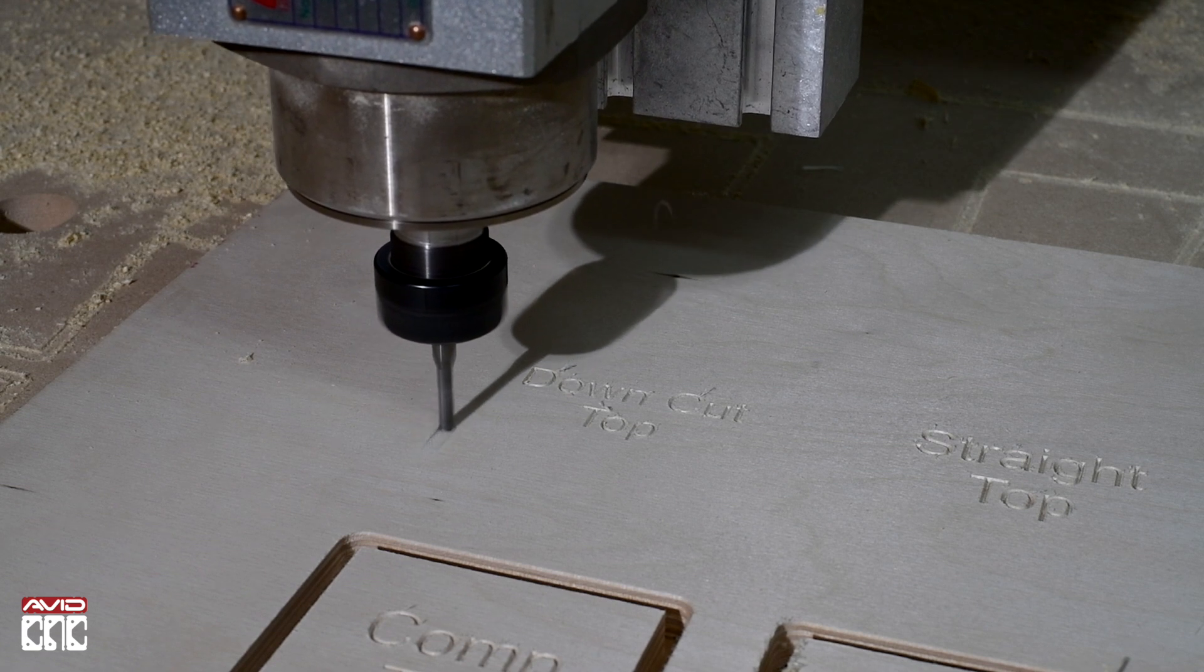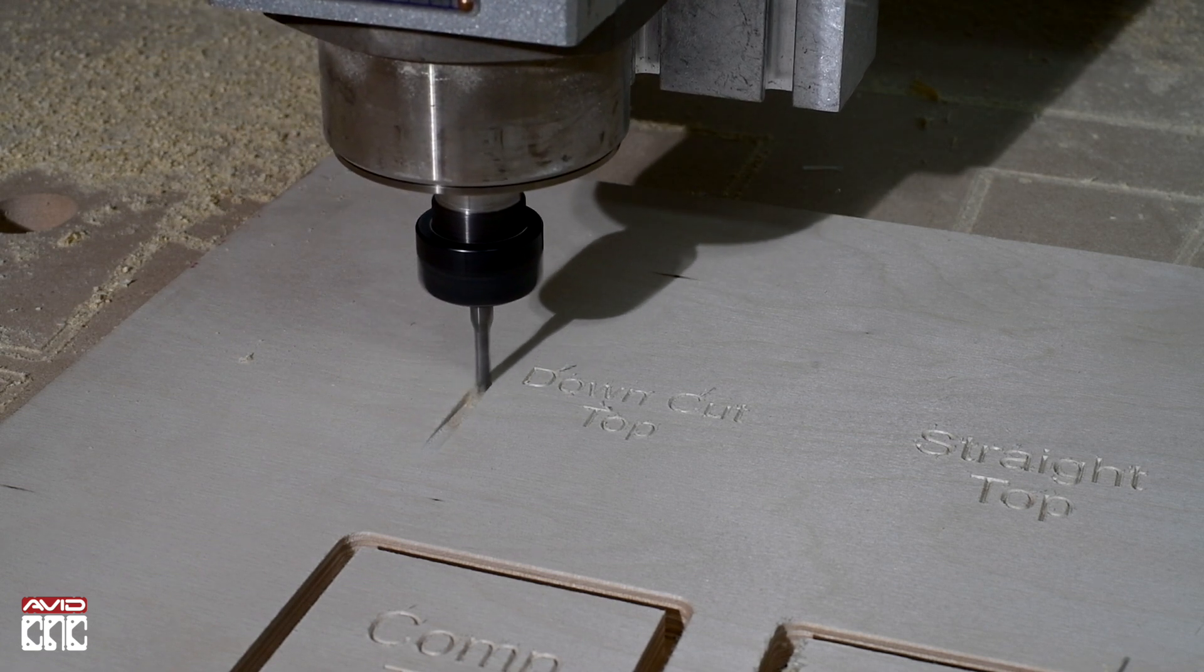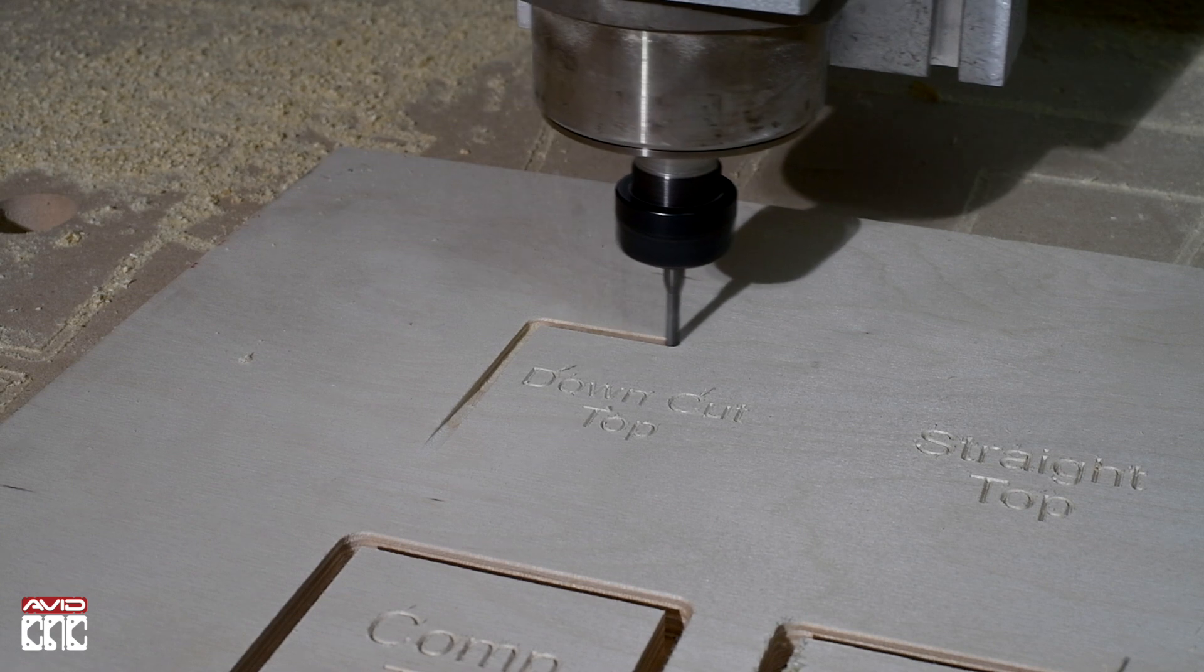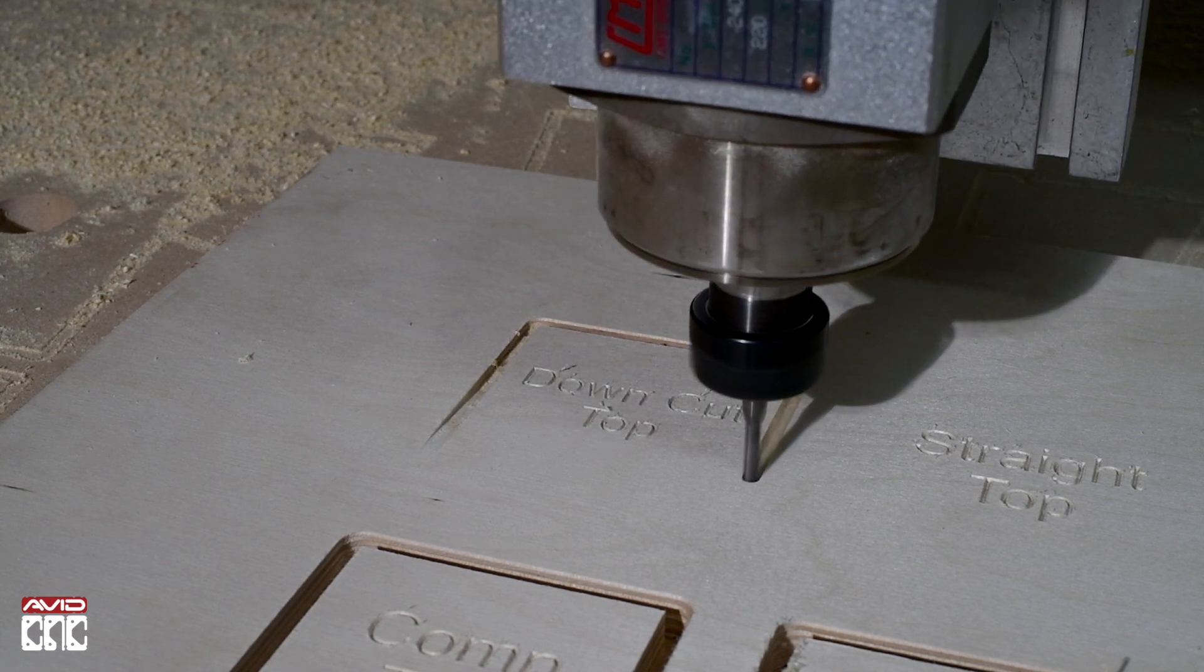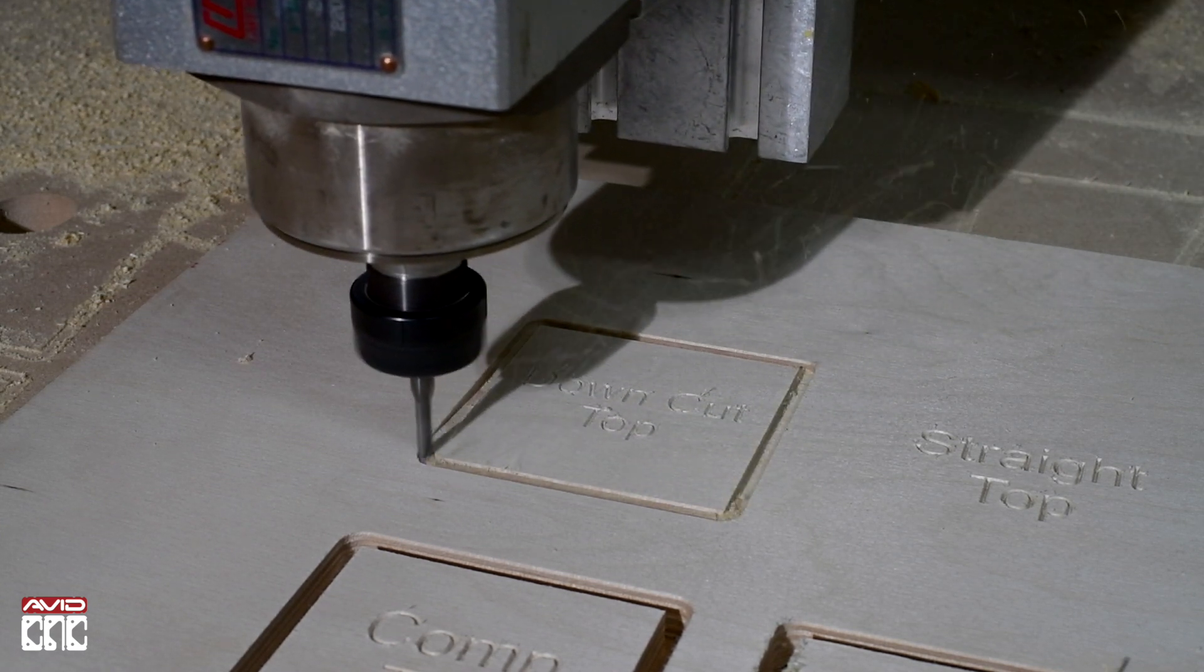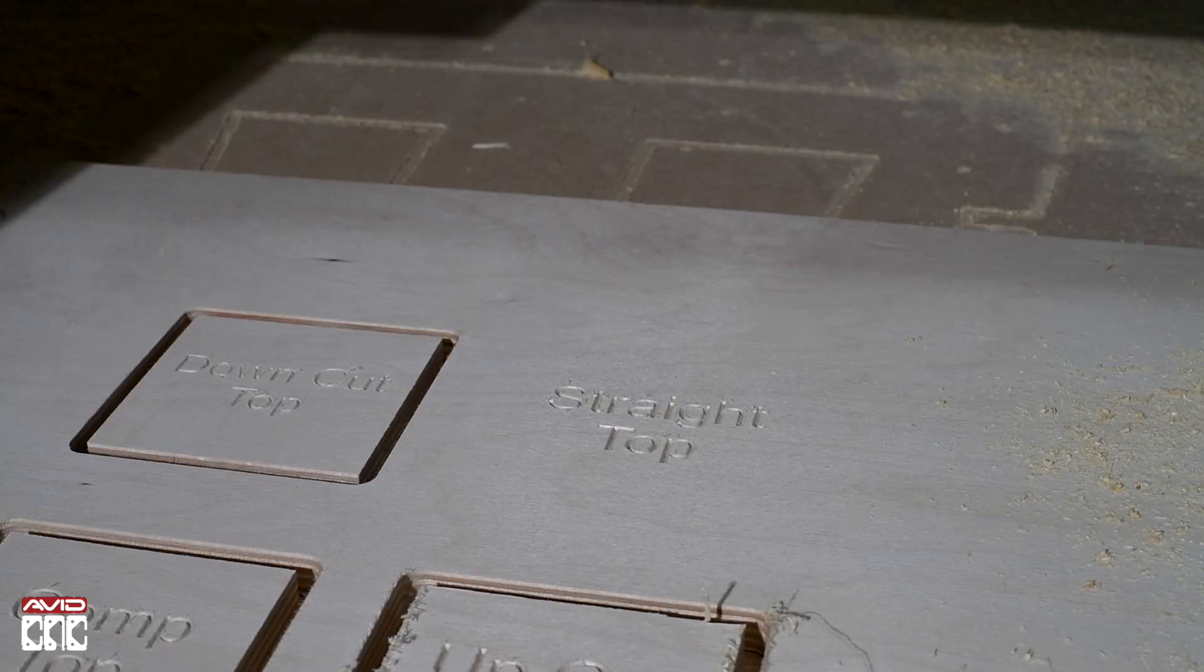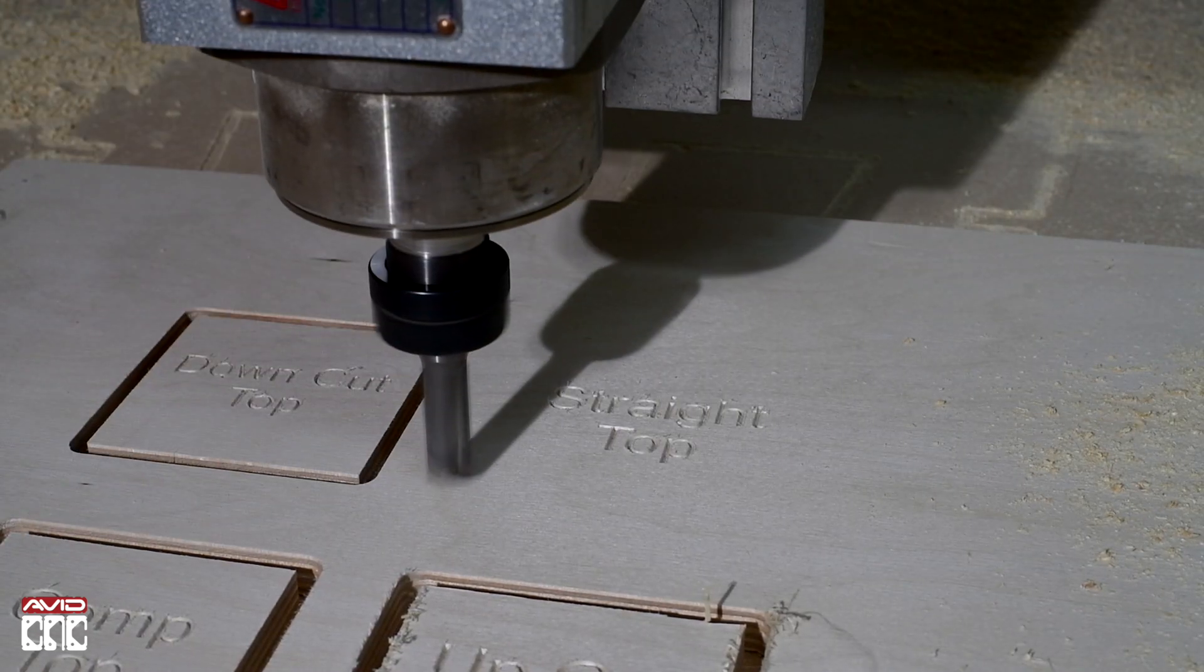Next, we have down spiral. If you look closely, you can see that we've programmed a ramp into this toolpath. And lastly, we have the straight cut.